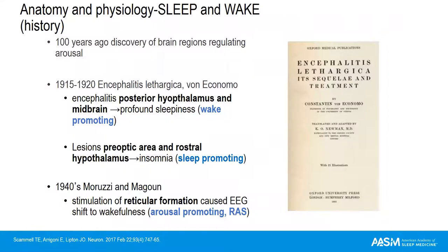Regarding anatomy and physiology: roughly 100 years ago, during the epidemic of encephalitis lethargica, von Economo autopsied many patients and found that lesions primarily in the posterior hypothalamus and midbrain caused extreme sleepiness, identifying those as wake-promoting regions. Lesions of the preoptic area and rostral hypothalamus caused severe insomnia, identifying those as sleep-promoting regions. In the 1940s, stimulation of the reticular formation in anesthetized animals produced a shift in EEG to wakefulness, dubbing it the reticular activating system as the arousal-promoting center.